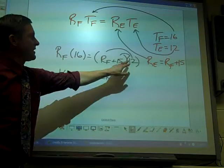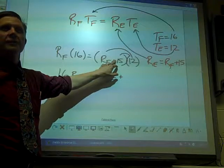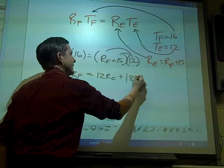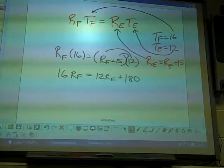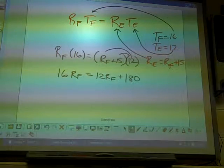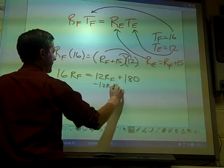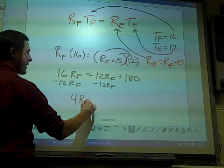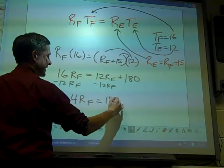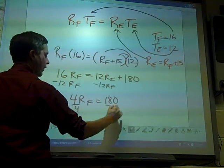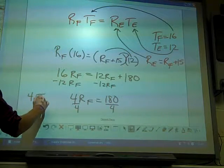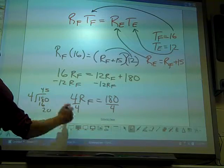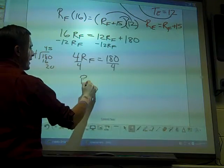Alright, 10 times 15 is 150, right? Two times 15 is 30, right? 150 plus 30 is 180. That's why we can break apart 12 into 10 and 2. So now you subtract 12R_F, and you get 4R_F equals 180. Divide by 4. 4 into 180, how about 45? And we get R_F is 45.